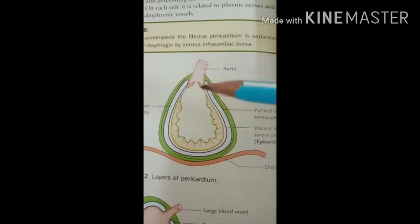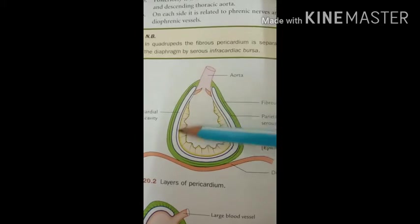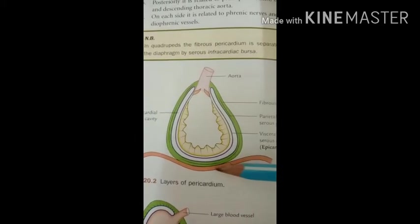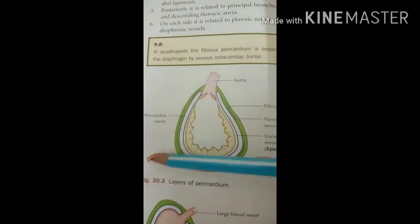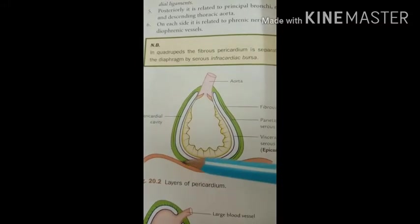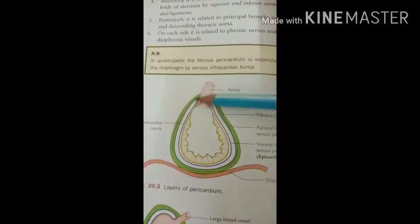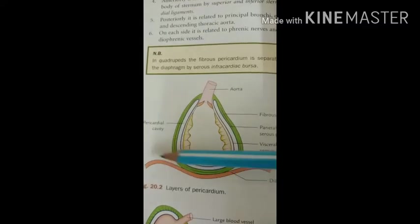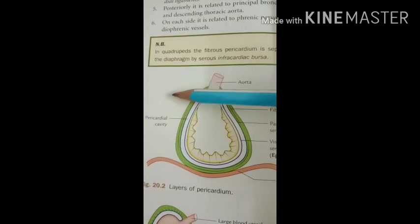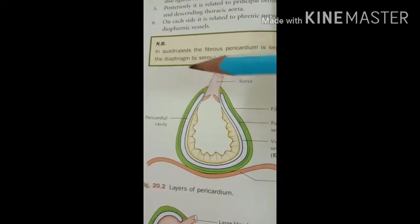In Ayurveda the pericardium is called the hridayavaran kala. Here you can see the heart is present and it is covered by the pericardium. In the lower side you can see the brownish colored diaphragm and the central tendon of the diaphragm. Here the great vessel — the aorta — is also visible. This total heart is covered by a fibroserous sac which encloses the heart and the root of the great vessels.